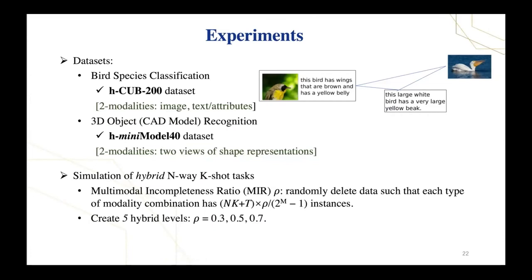The second dataset is for 3D model classification and also has two modalities, which are two views of shape representations of each 3D model. In the simulated hybrid task, a sample can be represented by view 1 or view 2 or combined two views.